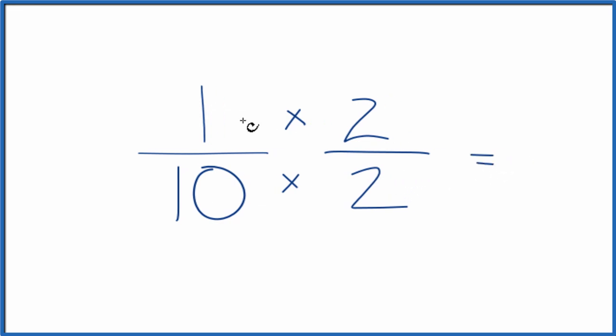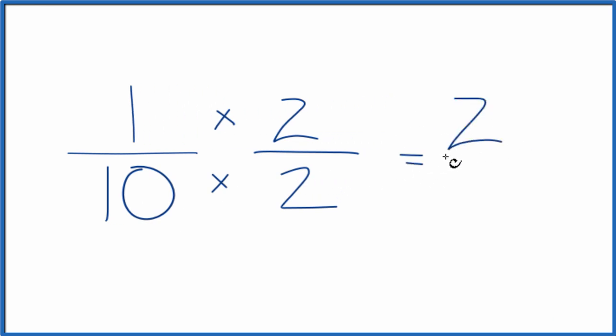But now, 1 times 2, that's 2, and 10 times 2, that's 20. And 2 over 20, that's an equivalent fraction to 1 tenth.